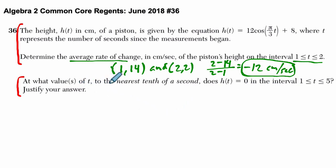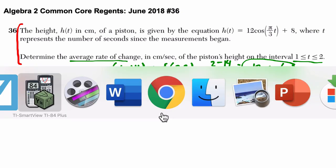At what values of t to the nearest tenth of a second does h(t) equal 0 over the interval 1 to 5? Well, we already have the graph, so first we'll solve it graphically, but then I'll show it algebraically, just in case that's something you need to do.